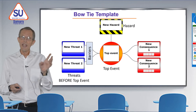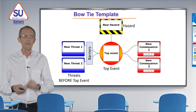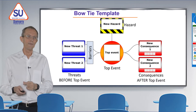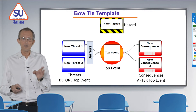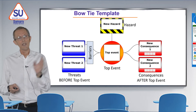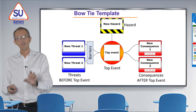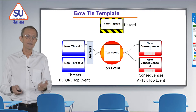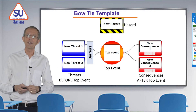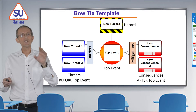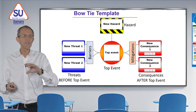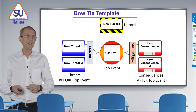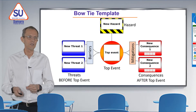The other side is: if the barriers fail, the top event happens and there will be a consequence — something bad will happen. We can have consequences after the top event, but we can make those consequences less bad by putting in mitigations. Mitigations reduce the effect or the seriousness of the consequences. So that's the theory. Let's apply it now to local exhaust ventilation.